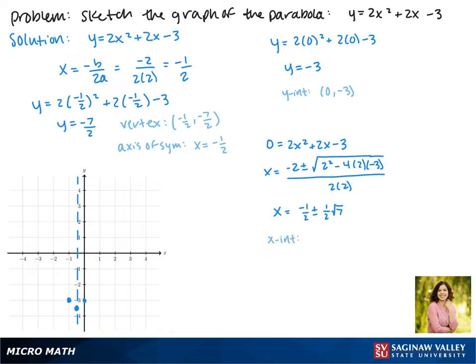Plugging this into your calculator, you'll get the x-intercepts of 0.82, 0, and negative 1.82, 0.